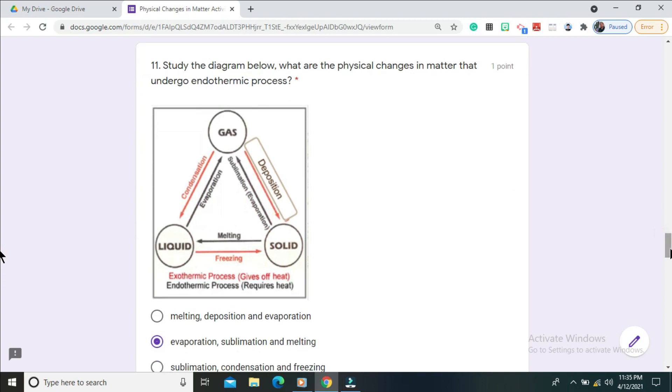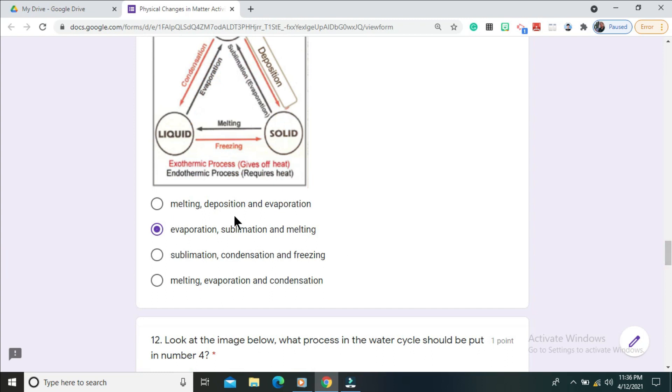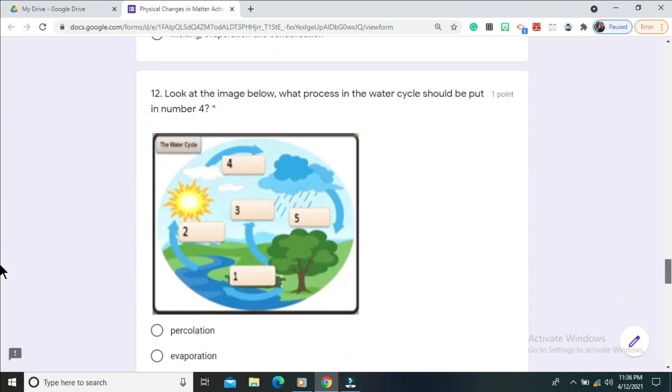Question number eleven: study the diagram below, what are the physical changes in matter that undergo endothermic process? The correct answer is evaporation, sublimation, and melting. Question number twelve: look at the image below, what process in the water cycle should be put in number four?